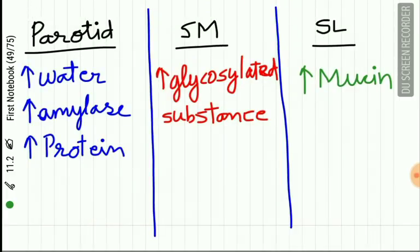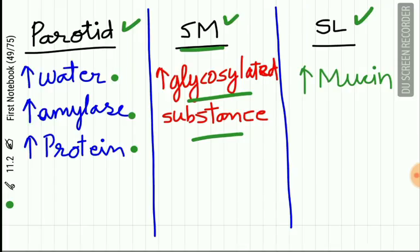The secretion from different major salivary glands also differs. The parotid secretion is very watery and contains amylase and proteins. The submandibular gland secretion contains high amounts of glycosylated substances, while sublingual saliva is rich in mucin.